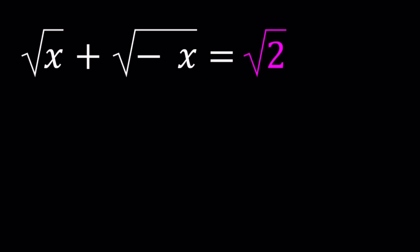Hello everyone. In this video we're going to be solving a very interesting radical equation. We have square root of x plus square root of negative x equals square root of 2, and we're going to be looking for x values. I'll be presenting three methods, but before we get started with the methods, let's go ahead and take a look at the graph of the function on the left hand side.